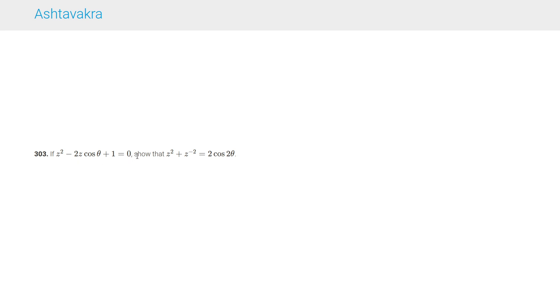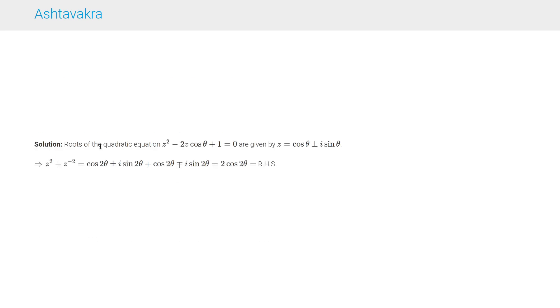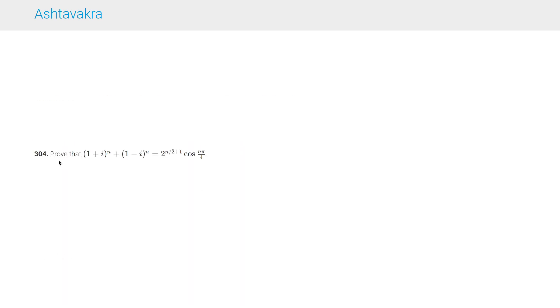Question 303 says: if z² - 2z cos θ + 1 = 0, show that z² + z⁻² = 2 cos 2θ. From the given equation, the roots are z = cos θ ± i sin θ. So z² + z⁻² = (cos 2θ ± i sin 2θ) + (cos 2θ ∓ i sin 2θ). Adding these, the i sin 2θ terms cancel and the result is 2 cos 2θ, which is the required result.